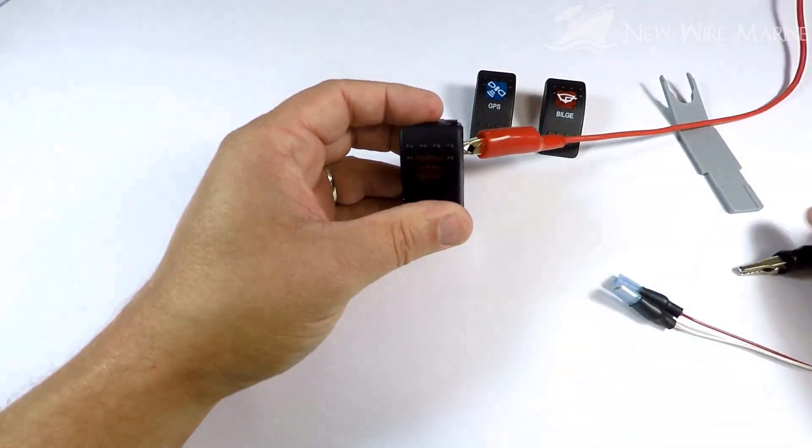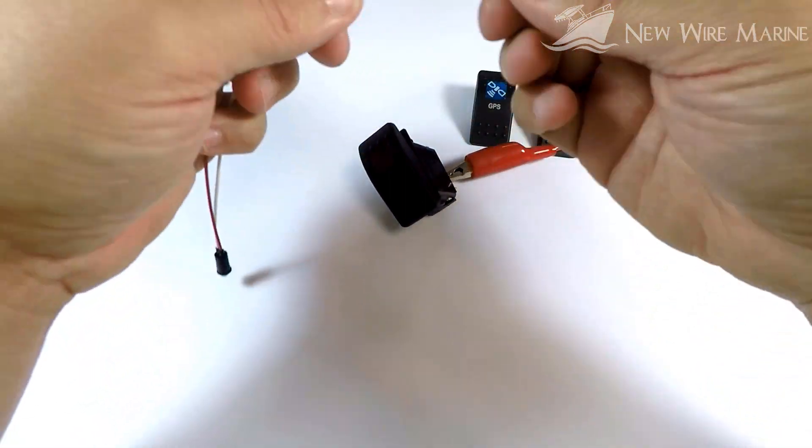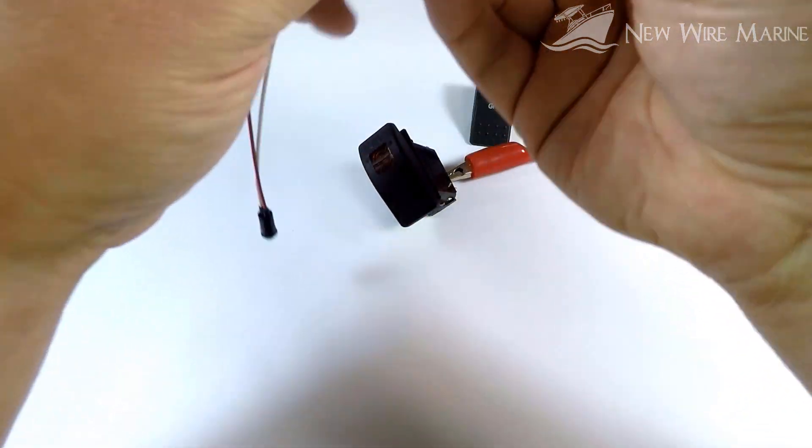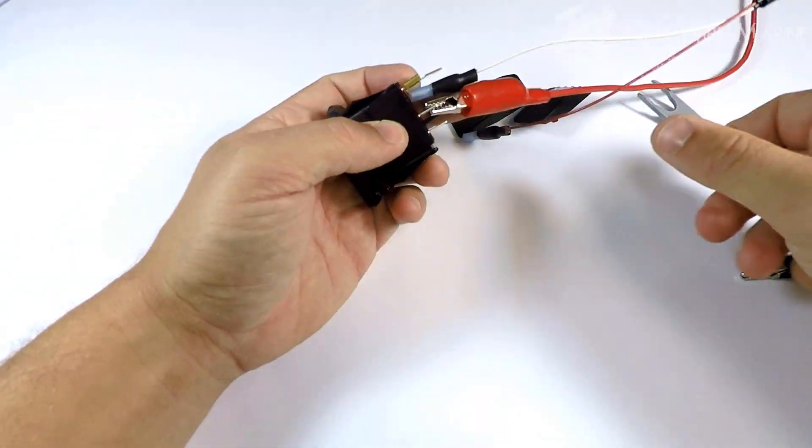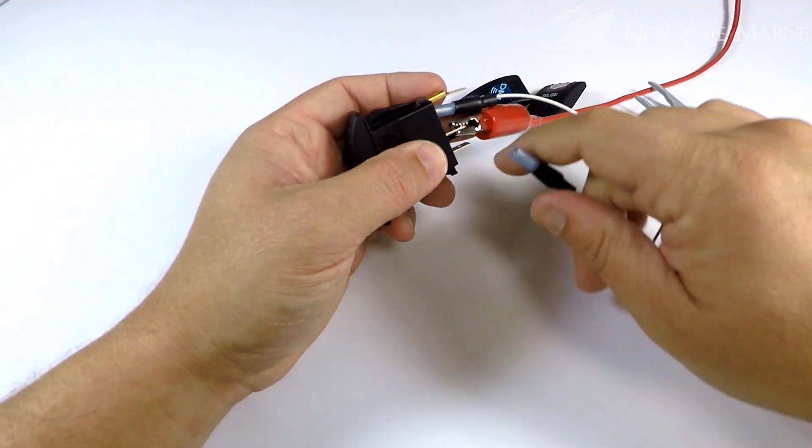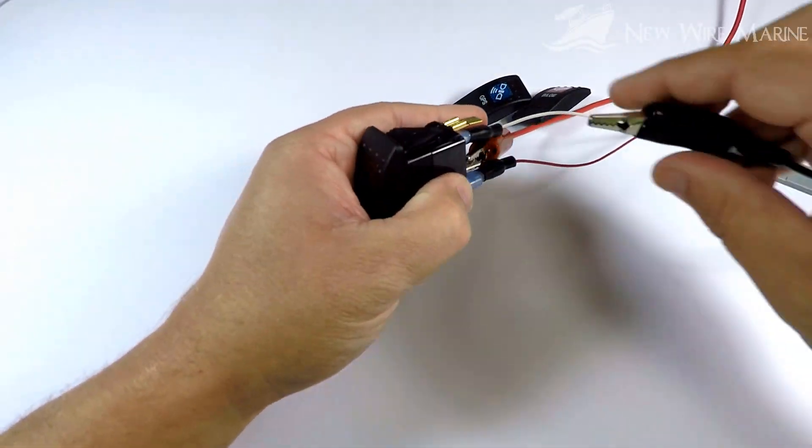Now I'm going to hook up a test light to the output of the switch. We'll use a piggyback here to put the negative of the test light onto the negative of the switch, so we have return current flow. And the positive onto terminal 3, that's the output terminal.